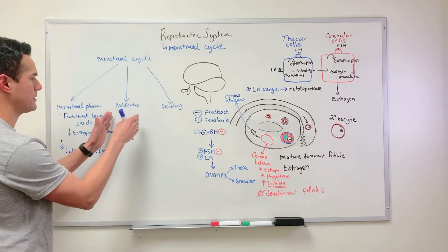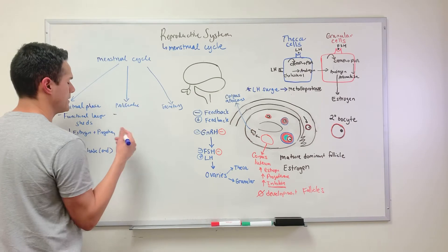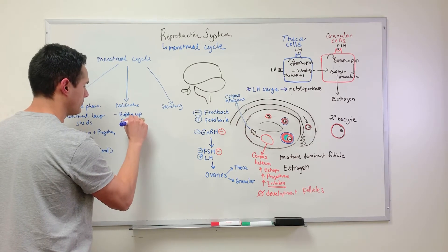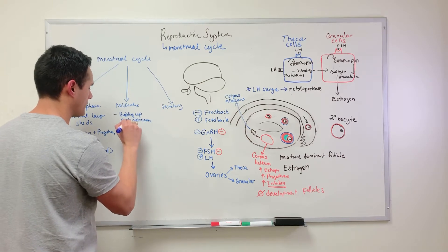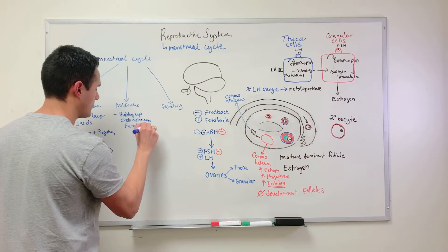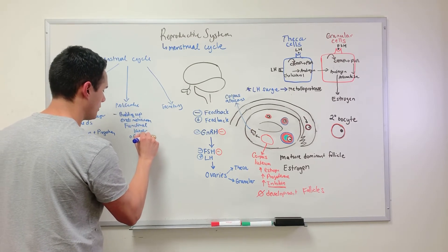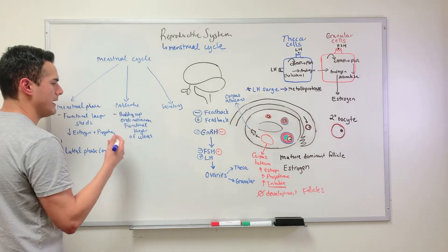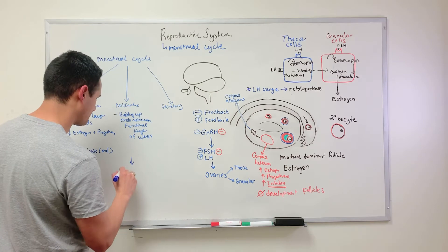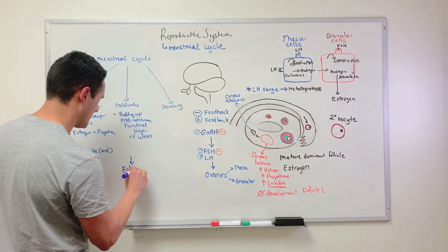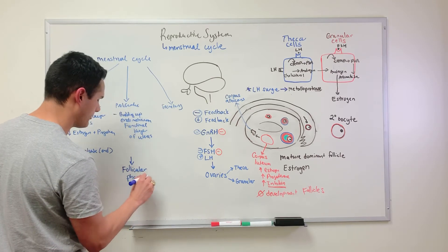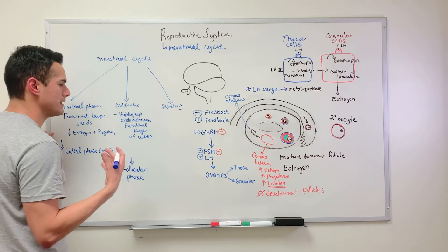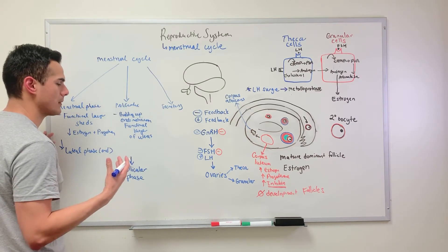During the proliferative stage, we're building up the endometrium — the functional layer of the uterus. This is what's occurring during the follicular phase, when we're developing the follicle. We're preparing the uterus for the implantation of our zygote.